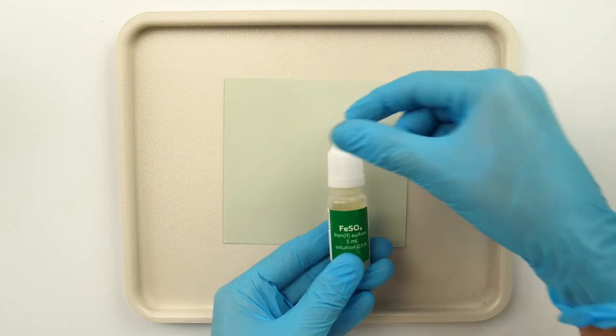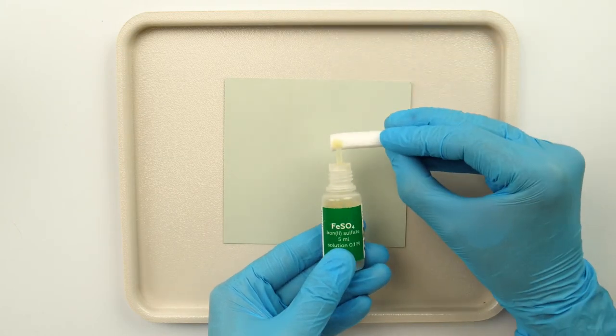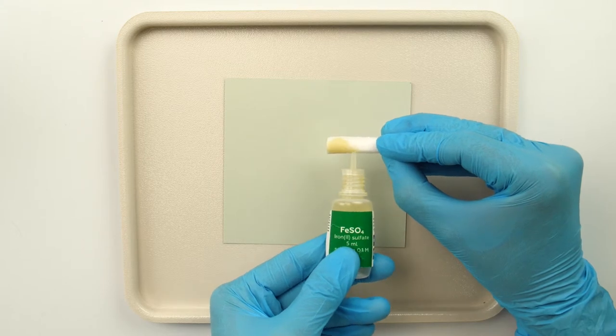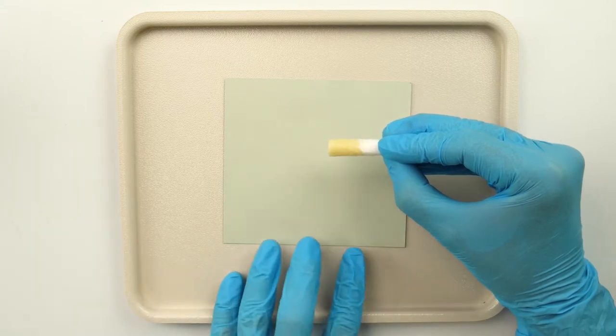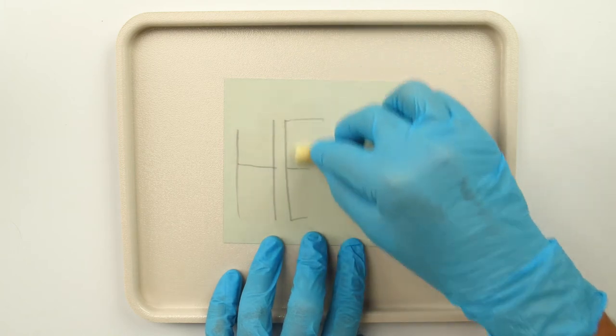Reveal the secret message. Moisten your cotton absorbent with iron sulfate and rub the absorbent on the piece of paper. Now you can read your secret message.